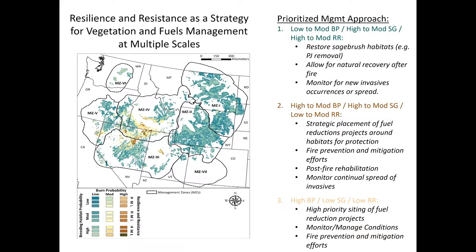This assessment can also help inform the strategic placement of wildland fire vegetation management projects that can mitigate the collective effects of fire, enhance wildfire suppression efforts, and help restore habitat across the sagebrush biome. Here is a general approach for prioritizing management actions based on the 27 different combinations of fire risk.